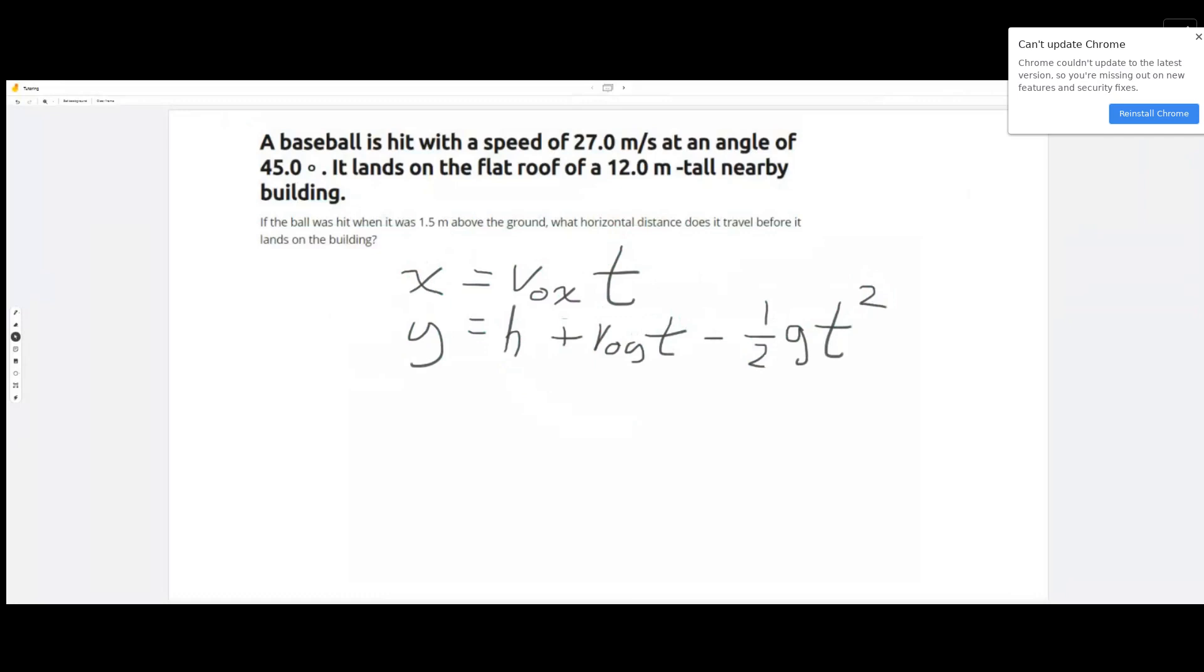We know that the speed, the initial speed, was 27 meters per second and the angle was 45 degrees. So the first thing we have to do here is break down that initial speed into its vertical and horizontal components. We have to take the initial x velocity and say that that is equal to the initial velocity times the cosine of the angle, which will be 45 degrees.